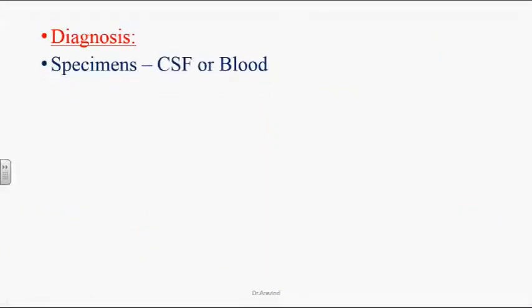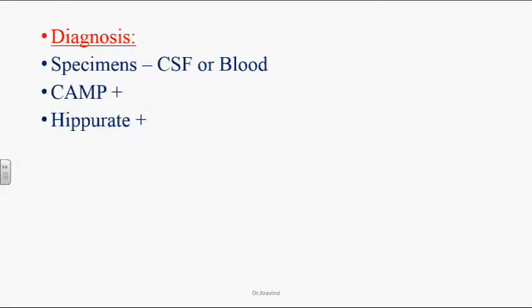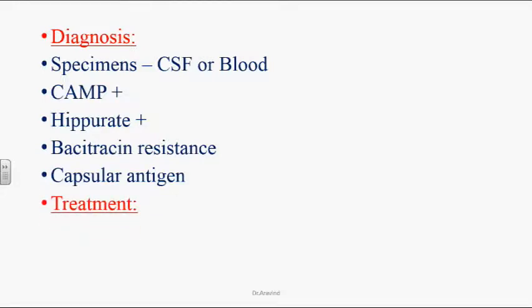For diagnosis, specimens are taken from CSF and blood. You can see increased PMN cells, slightly elevated protein, and decreased glucose, indicating bacterial infection. CAMP positiveness on culture media shows enhanced hemolytic areas adjacent to Staphylococcus aureus. Organisms are hippurate positive — hydrolyzing hippurate to benzoic acid and glycine — demonstrated by color change with ninhydrin. Bacitracin resistance and polysaccharide capsule can be observed with Quellung test.